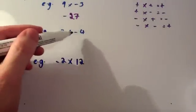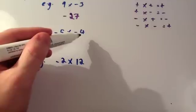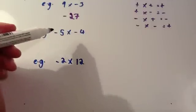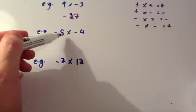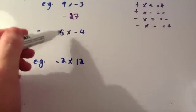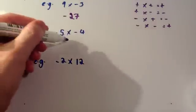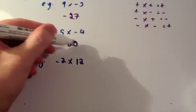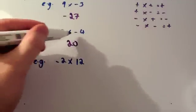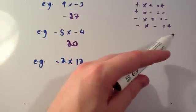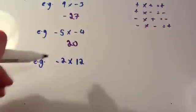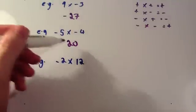Next one: negative 5 times by negative 4. Again, I just ignore the negatives for the moment and do 5 times 4. 5 times 4 is 20. A negative times a negative is a positive. So the answer is just 20.